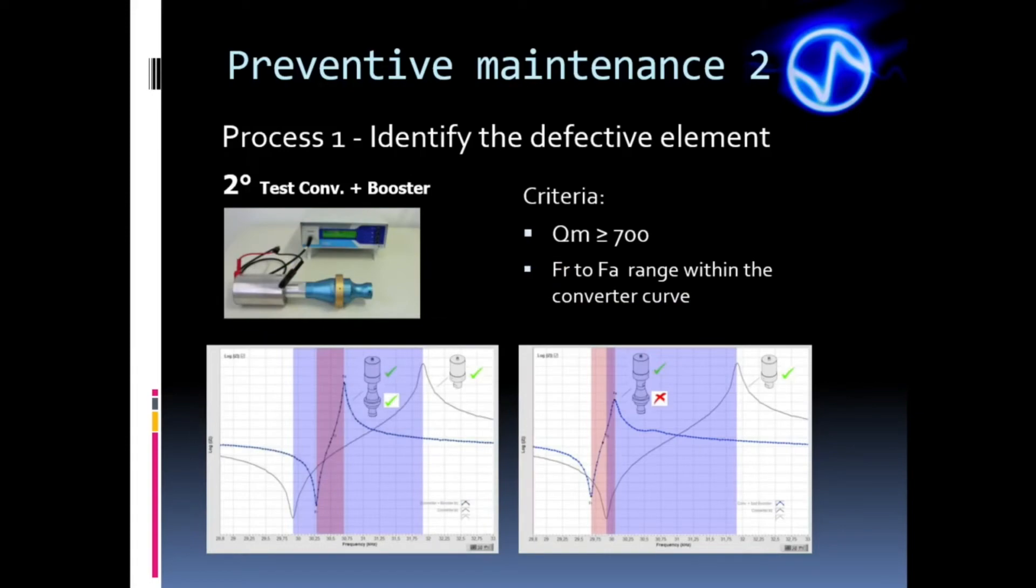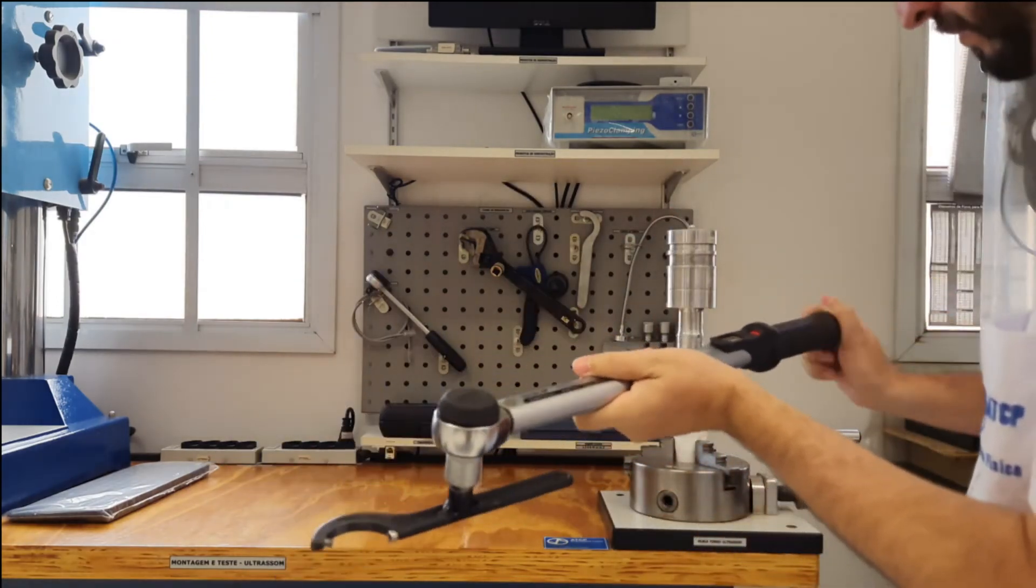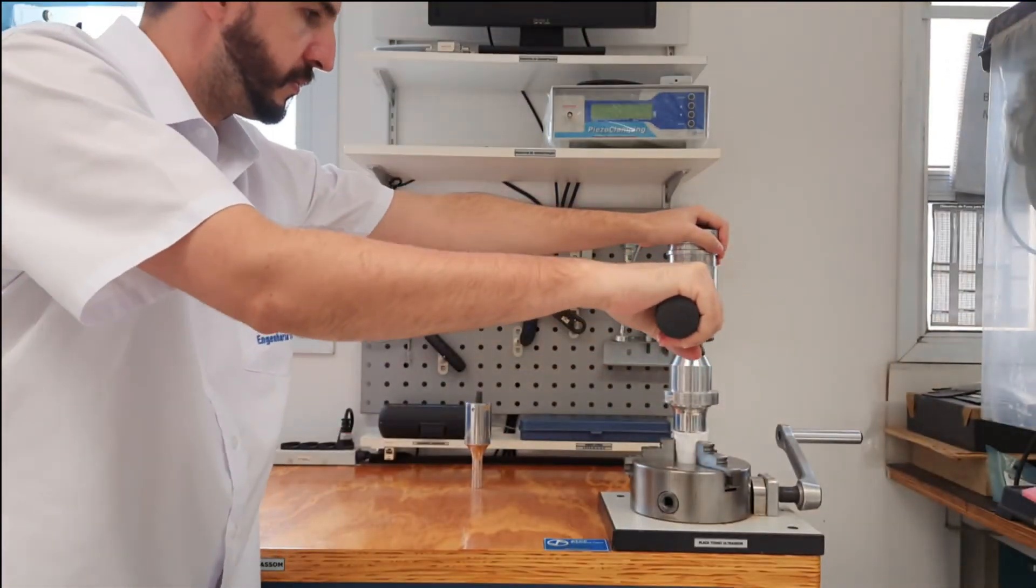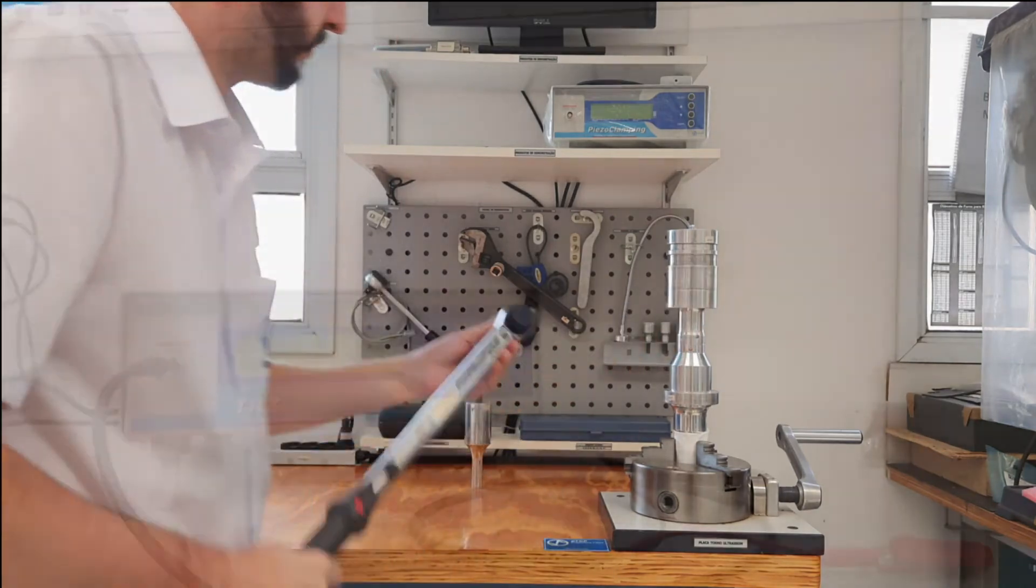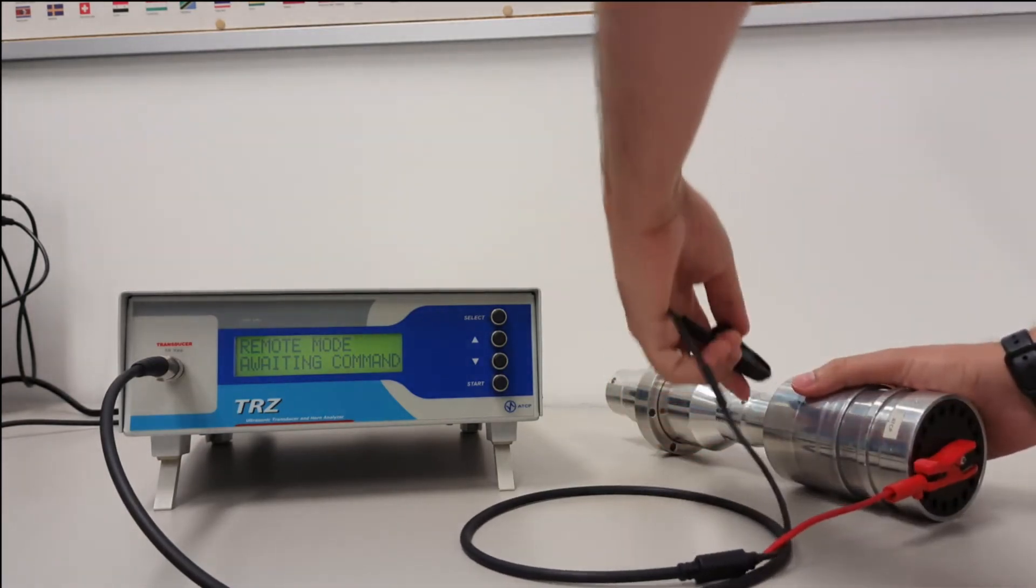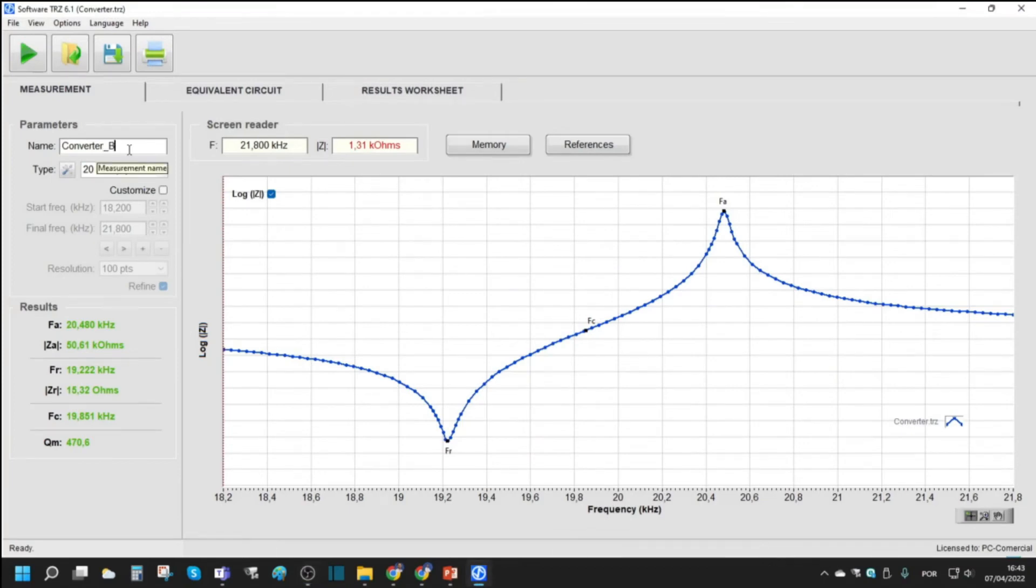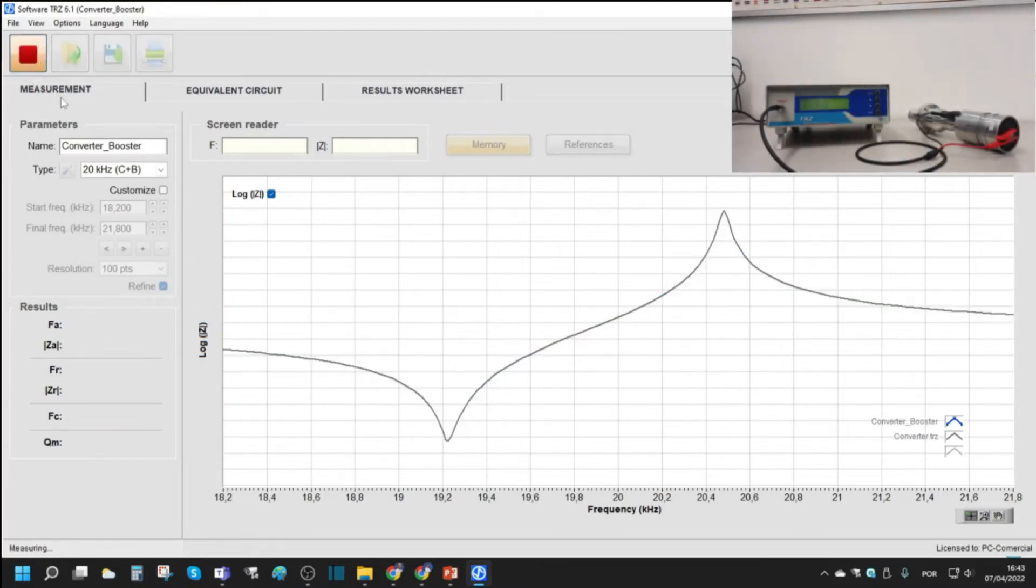The booster test procedure is similar to the one used with the converter. First, we need to couple the booster on the converter with controlled torque and with clean and smooth interfaces just as we did in preventive 1. Then just connect the alligator clips in the same places as the converter test. The acceptance criteria of the converter plus booster is related to the frequency of the converter alone. That's why we need to turn on the software memory function to compare the curves. After that, we need to change the software from C to C plus B. Finally, we click on play button to measure.